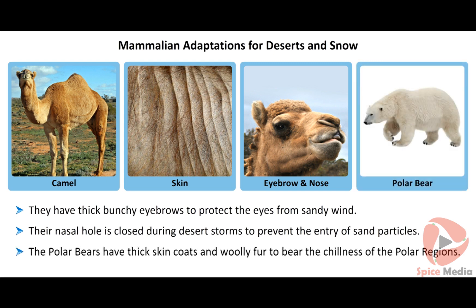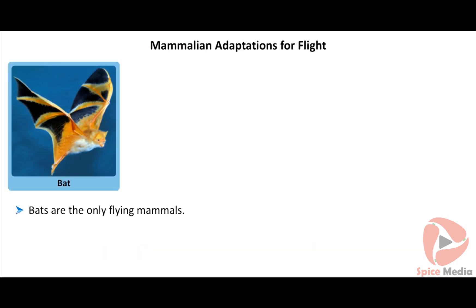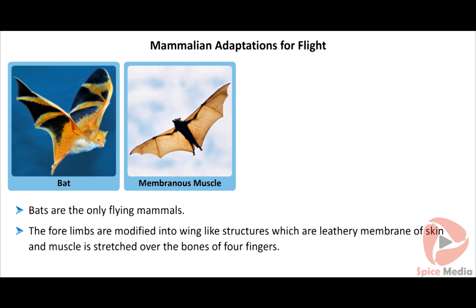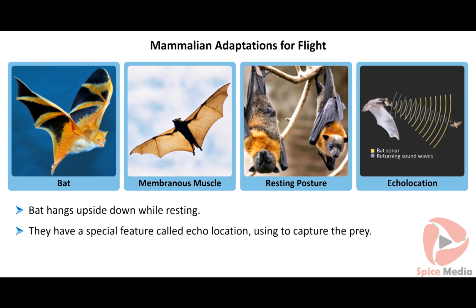The polar bears have thick skin coats and woolly fur to bear the chillness of the polar regions. Bats are the only flying mammals. The forelimbs are modified into wing-like structures, which are leathery membranes of skin and muscle stretched over the bones of four fingers. Bats hang upside down while resting.